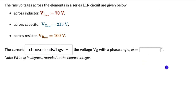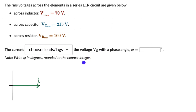For phasor diagrams, we bring in the coordinate axes and start off by drawing the current vector, because then we will have a reference for all the other voltages. Let's say the current is along the x-axis. Using our knowledge of whether the voltage leads or lags the current, we draw vectors for all other voltages. We know that the voltage across the resistor is in phase with the current, so the resistor vector is along the current direction. The vector lengths represent peak values, so V0R represents the peak value across the resistor.